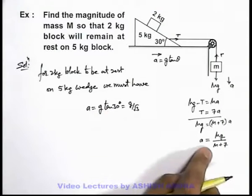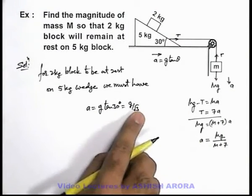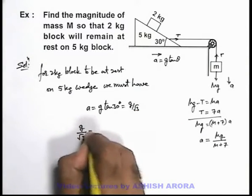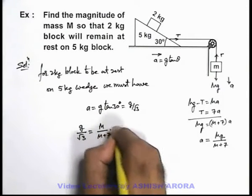As we've already got the value of acceleration by solving these equations, we can equate the two to find out the value of m. Here we're having g/√3 = m/(m + 7) × g.